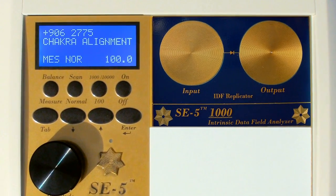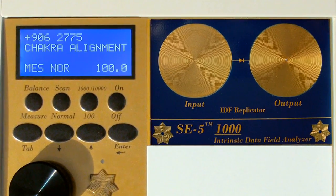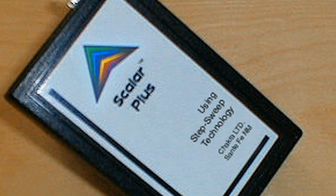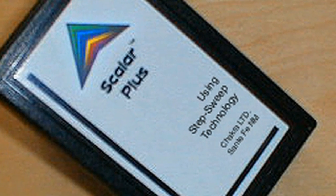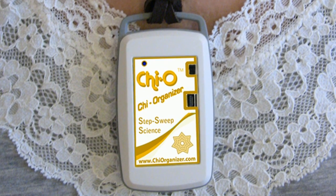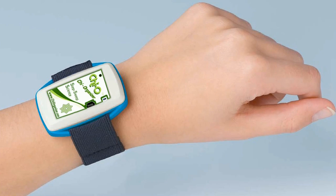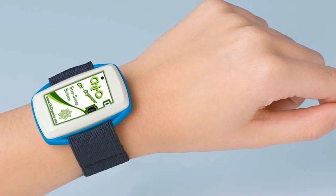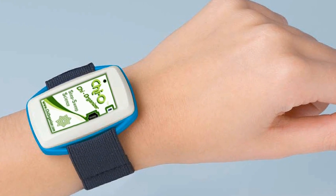After I developed the SE5-1000, I decided I was going to take the Scalar Plus and shrink it down and put it into a smaller box so that a person could wear it around their neck, keep it in their pocket, or even wear it as an armband. That worked really well — people loved them and got great results. We just had rave reviews. The only thing people complained about is that they were in a little plastic box and weren't very pretty.